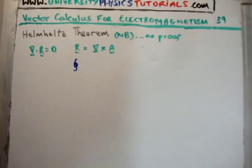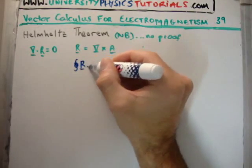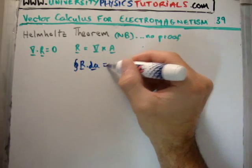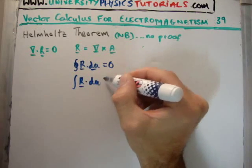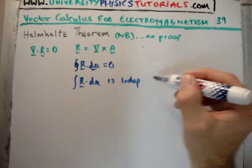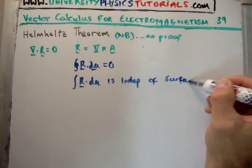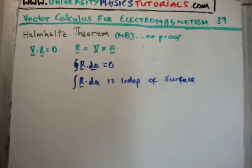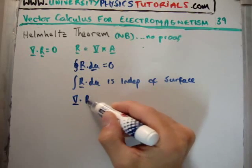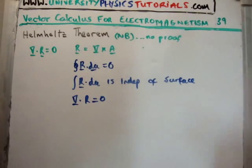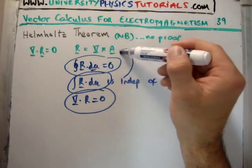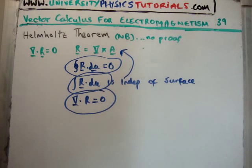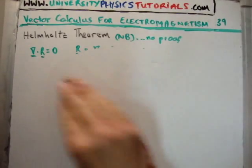The equivalent statements for a divergence-free field are: the closed surface integral of R·dA equals zero everywhere; or the surface integral of R·dA is independent of surface. Of course, the divergence of the field being zero is also equivalent. We look for one of these conditions in order to express our field as the curl of a vector potential A.